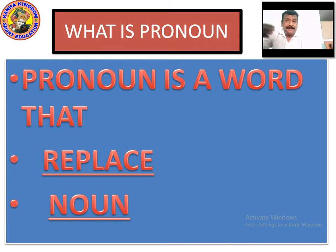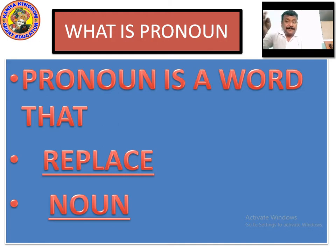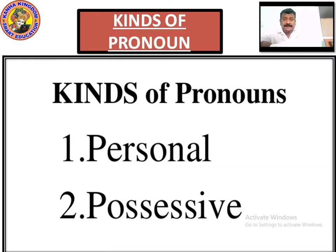We will understand it briefly with examples. Noun is a naming word — a people, place, animal, thing — which is replaced by a pronoun. Now let's see what are the kinds of pronouns. The kinds of pronouns are personal and possessive. There are two kinds of pronouns: personal and possessive.